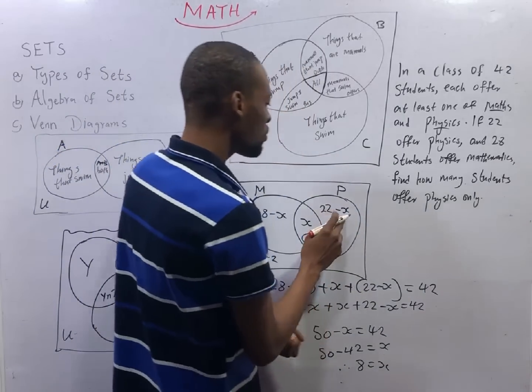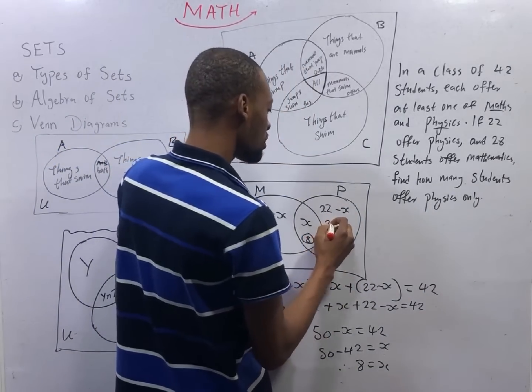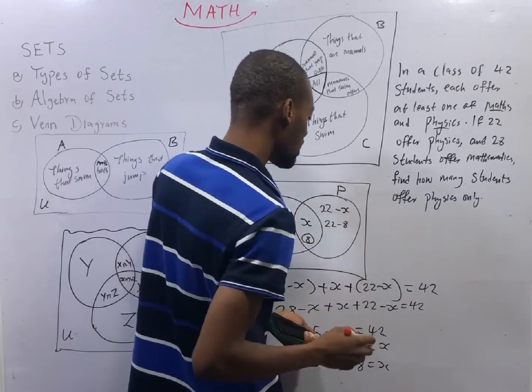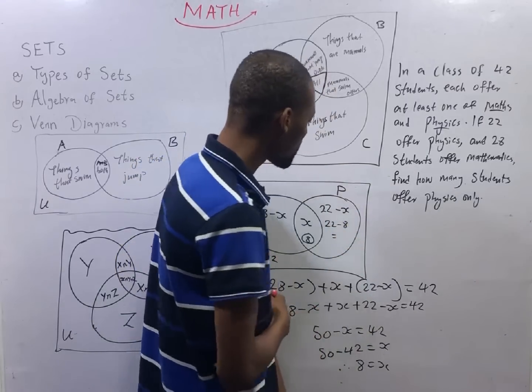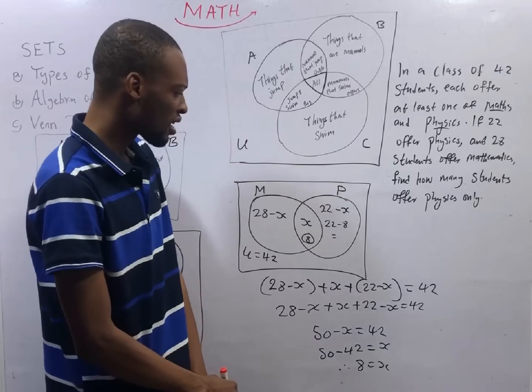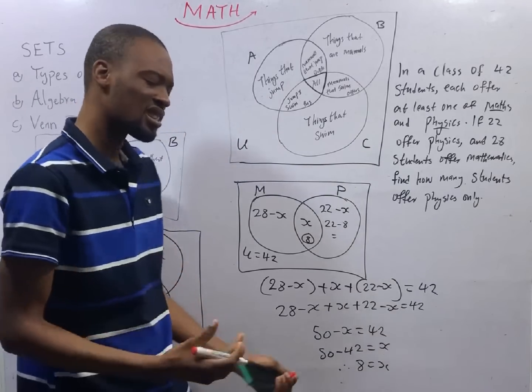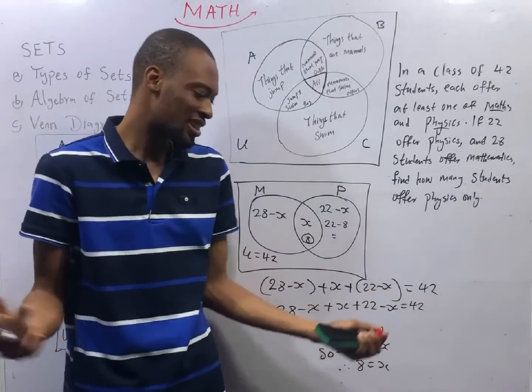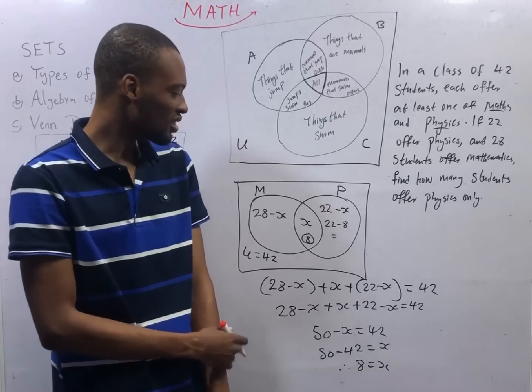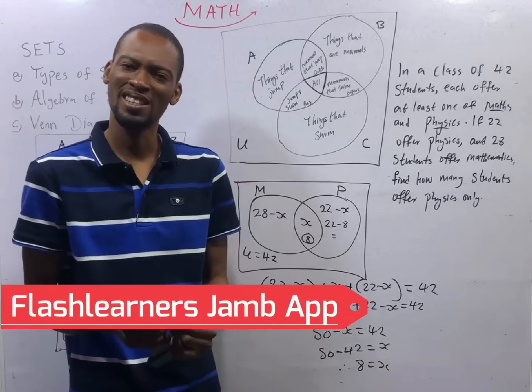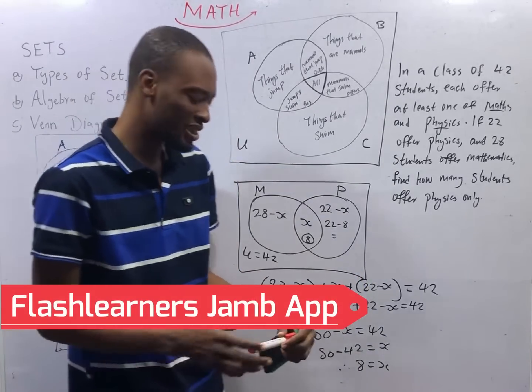We need those who offer physics only. And that is simply 22 minus S, which is 22 minus 8. And 22 minus 8, if I am very correct, is 14. So that is how to answer questions like this.